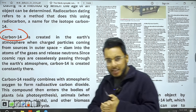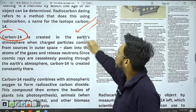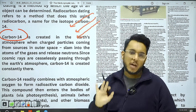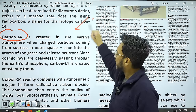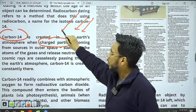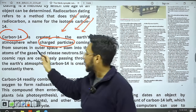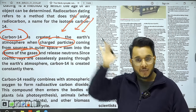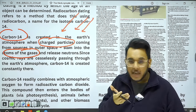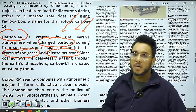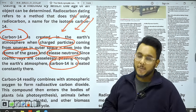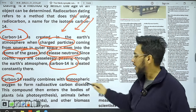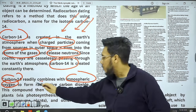When cosmic rays with charged particles come into contact with atoms of gases in the atmosphere, they release neutrons and in the process Carbon-14 is created. Carbon-14 is constantly being created on Earth. This Carbon-14 then combines with atmospheric oxygen to form radioactive carbon dioxide. This C-14 component is available in everything that contains carbon.